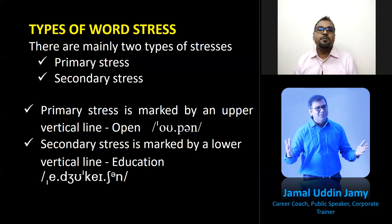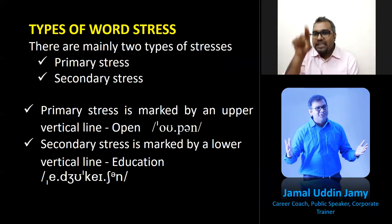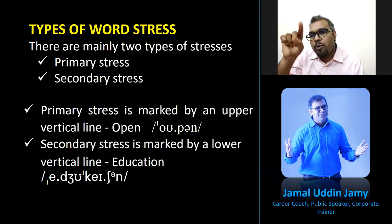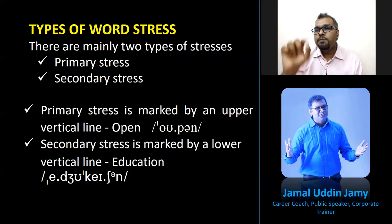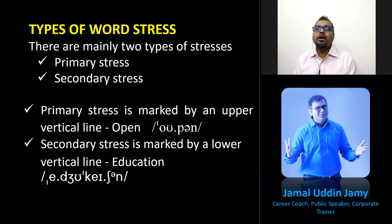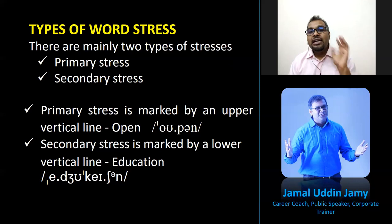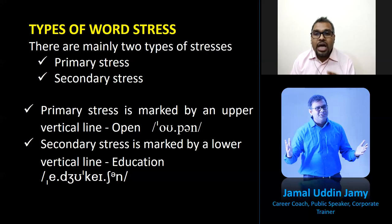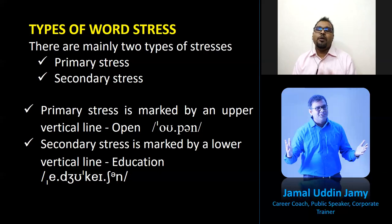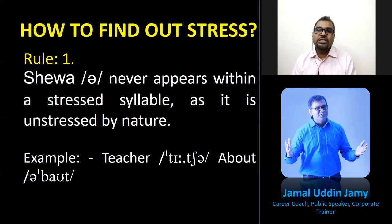There are mainly two types of stresses: primary and secondary. Primary stress is marked by an upper vertical line — for example, 'open.' Secondary stress is marked by a lower vertical line. For example, in 'education,' the primary syllable is 'k' and the secondary syllable is 'o.' We'll be focusing mainly on primary stress.